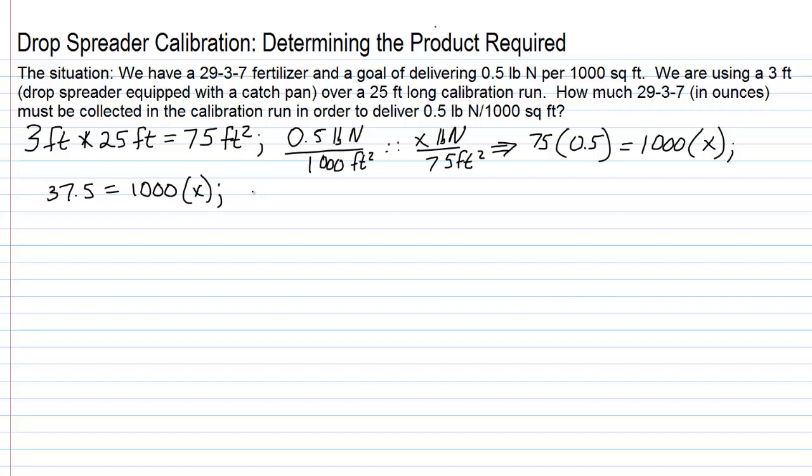Now, we're going to divide both sides by 1,000. 37.5 divided by 1,000 on that side, and 1,000 divided by 1,000 on this side. That's going to leave us only with x, and our answer is 0.0375.